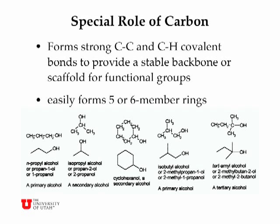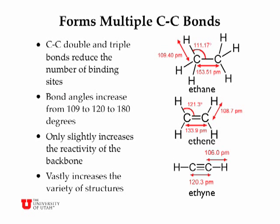Here I've listed a bunch of different alcohols with alkyl groups that either are straight or branched or formed rings, to form different kinds of primary, secondary, and tertiary alcohols. Carbon also can form multiple carbon-carbon bonds — double bonds and triple bonds.